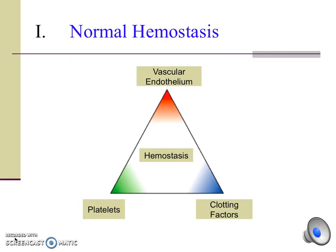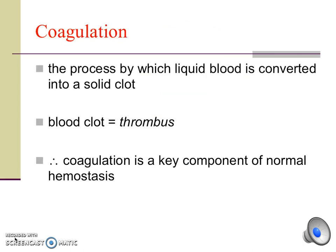Let's start with normal hemostasis. When the blood vessel is injured as a result of trauma, the subsequent defect in the blood vessel wall disrupts the inner endothelial cell lining. This triggers a repair mechanism that ultimately stops the bleeding. Normal hemostasis is the physiologic process by which the blood vessel lining cells, also called vascular endothelial cells, plus platelets and coagulation factors in the blood, work together to stop bleeding at the site of injury. Coagulation is the process by which liquid blood is converted into a solid blood clot. Therefore, coagulation is a key component of hemostasis, but is not the only factor necessary in achieving normal hemostasis.